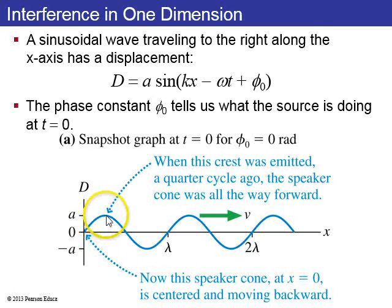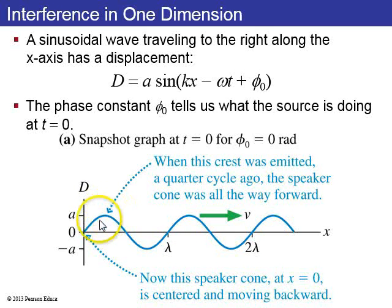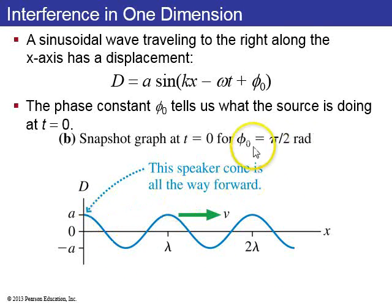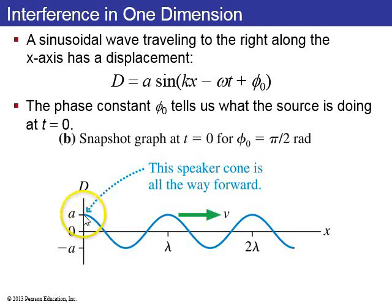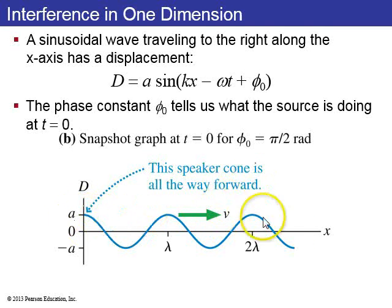Over here, this crest was emitted a quarter cycle ago, moving toward the right at speed v. When it was emitted, the speaker cone was all the way toward the right, creating a maximum displacement of the air particles. Here's a wave with the same frequency and wave number, but now a different phase constant, pi over 2. Since the phase constant is pi over 2, at t equals zero, this sine wave is displaced to the left by a quarter of a cycle, and the crest now happens at t equals zero and x equals zero.